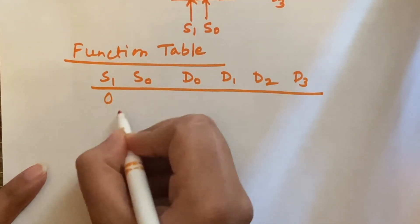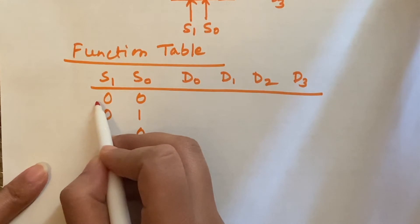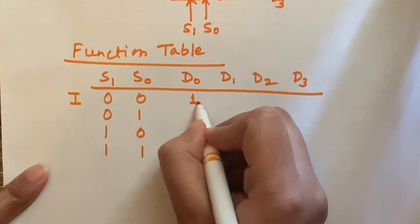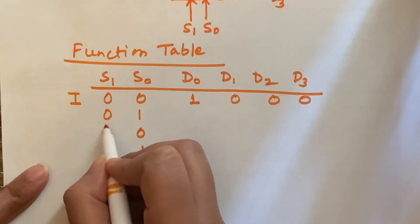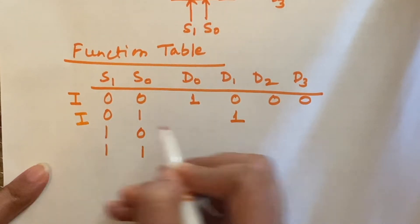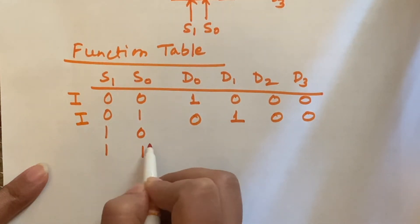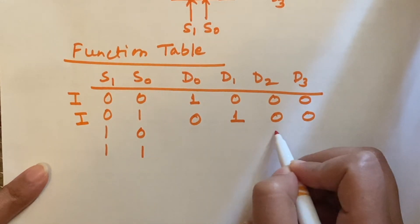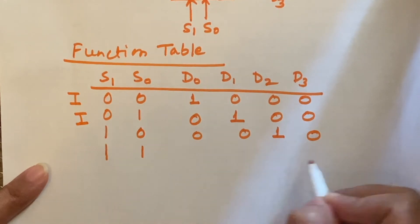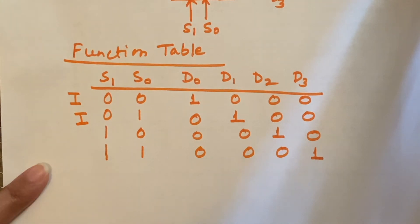In the function table: when S1 S0 = 00, the input is transmitted through D0, rest are off. When S1 S0 = 01, D1 is selected and the input transmits through D1, rest are zero. When S1 S0 = 10, D2 is selected, rest are zero. When S1 S0 = 11, D3 is selected and rest are zero.